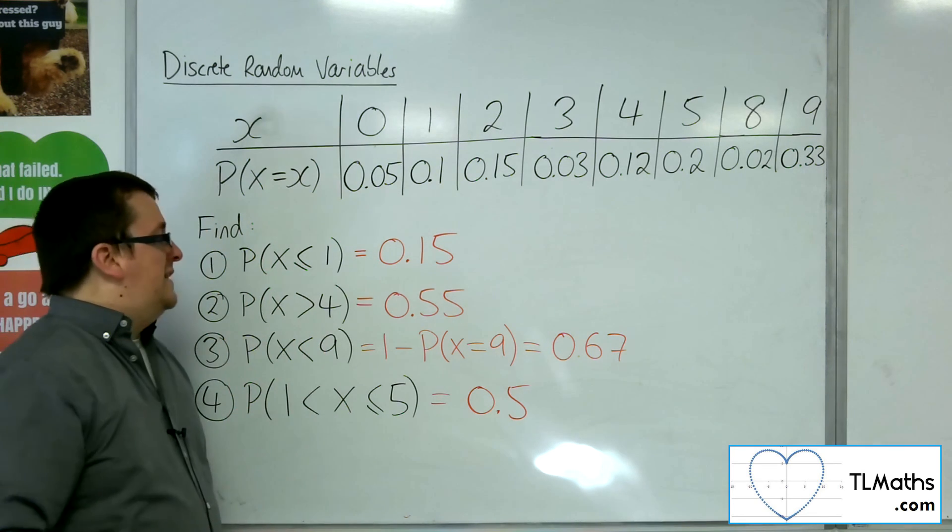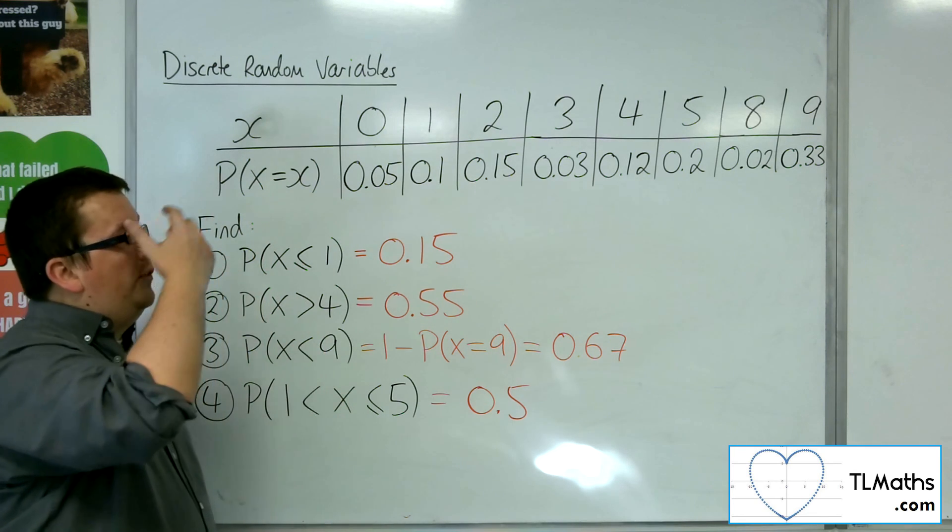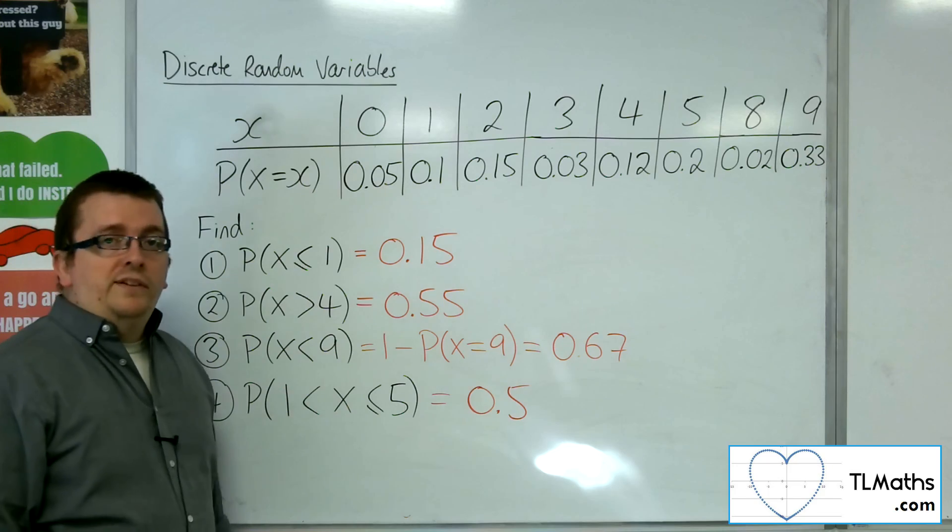Okay, so that is how we can find specific probabilities from a discrete probability distribution. Thank you.